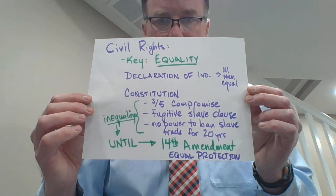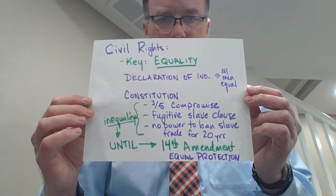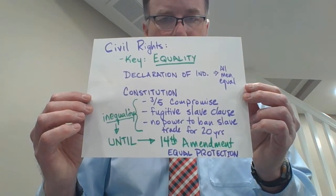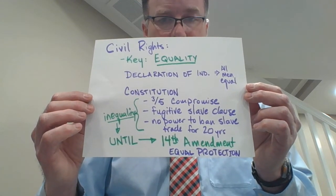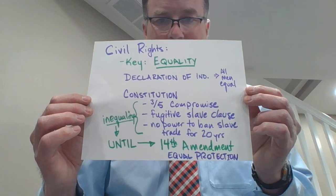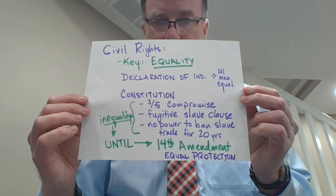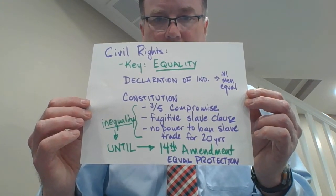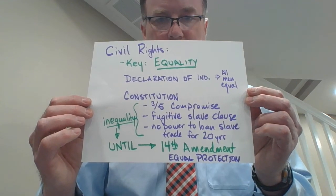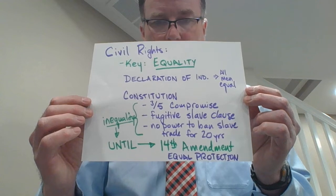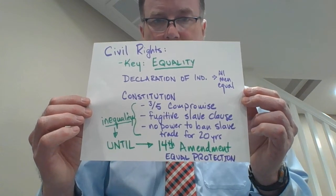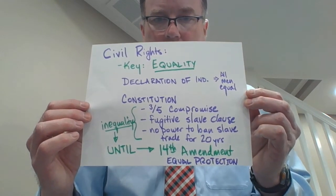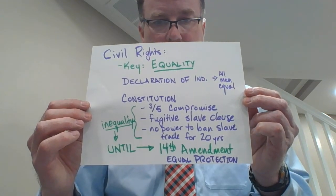When we look back historically to our foundational documents, the Declaration of Independence with its language 'all men are created equal' obviously included language regarding equality and egalitarianism, but the Constitution itself was not a document of equality. It was actually a document that enshrined inequality — you have the Three-Fifths Compromise, the Fugitive Slave Clause, and limits on Congress's power to ban the slave trade for 20 years. So the Constitution that came out of the convention in Philadelphia in 1787 was a document of inequality. But that changed when we got the 14th Amendment.